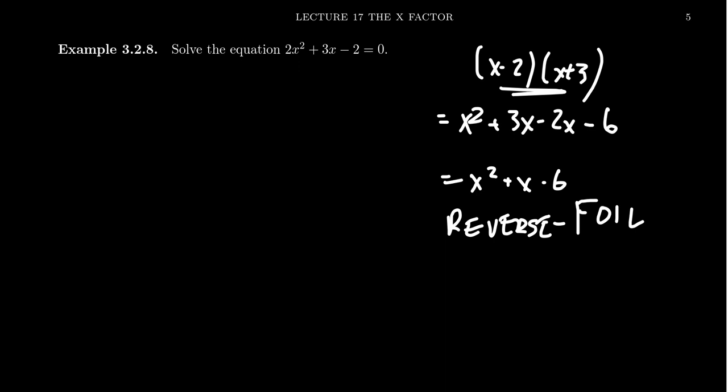How does one do that? Well, if we do this process backwards, the idea is this middle term was actually the combination of two like terms. So we have to replace the x with a three x minus a two x, and then we factor from there. But how do you decide what to break these things apart from? What clues do we have about these numbers three and negative two?